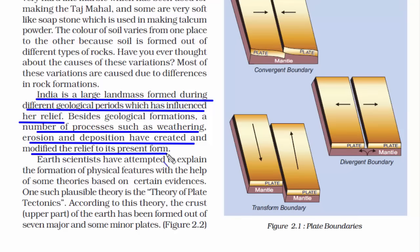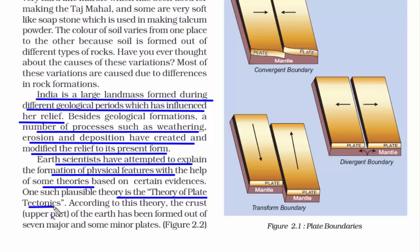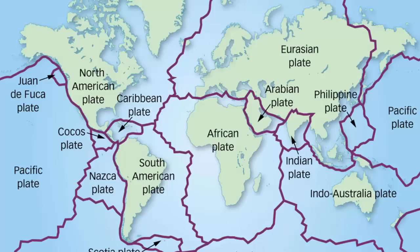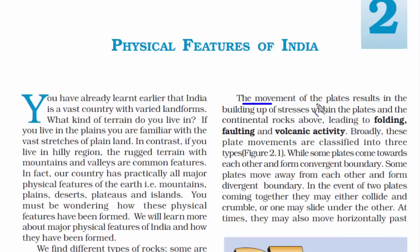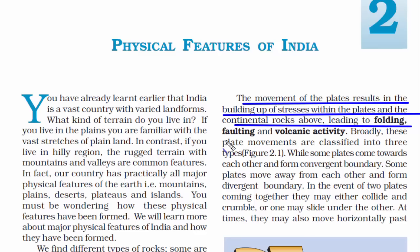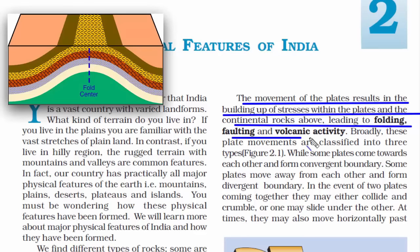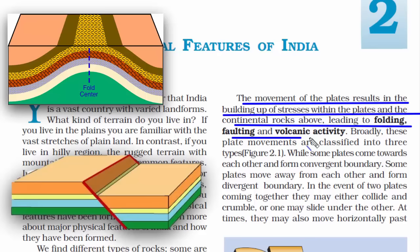But the big question is how did humans come to know about all this? Scientists have attempted to explain the formation of physical features with the help of theories. One such theory is the theory of plate tectonics, which says the crust — the upper part of the earth — is formed out of seven major and some minor plates. When these plates move, they build up stress, and the rocks above collide, leading to folding, faulting, and volcanic activity.